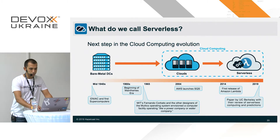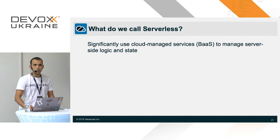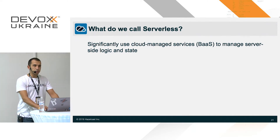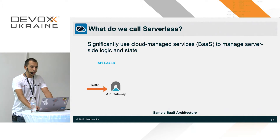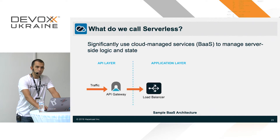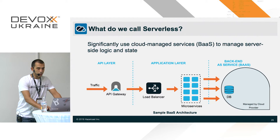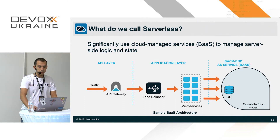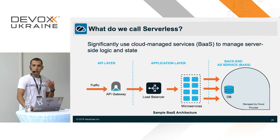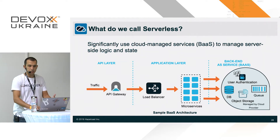Serverless applications significantly use cloud managed services — we call them Backend as a Service — to manage server-side logic, state, flows, and so on. Typically you have traffic coming over an API Gateway, which goes to a load balancer distributing load among microservices. At the back end, instead of setting up things yourself, you use managed services: database as a service, user authentication as a service, queue as a service, object storage as a service — all managed by cloud providers.